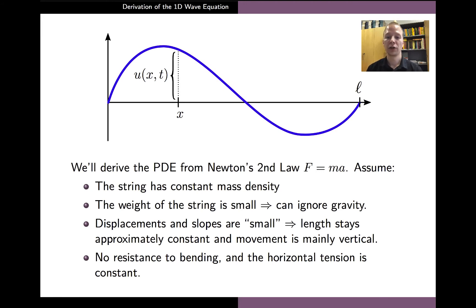We will use Newton's second law of motion in deriving the wave equation, and in the derivation we'll make some simplifying assumptions. First, we assume that the density of the string is constant throughout its length, and its weight is relatively small, so we can ignore the effect of gravity on the displacement. We also assume that the considered oscillations are small so that the length of the string stays approximately constant, the slopes of the string at every point are relatively small, and that at each point the string moves mainly in the vertical direction. Finally, we assume that the string itself does not resist bending, and the tension in the horizontal direction is roughly constant at all times.